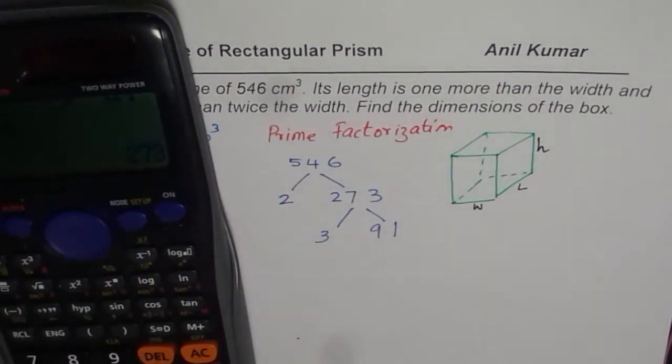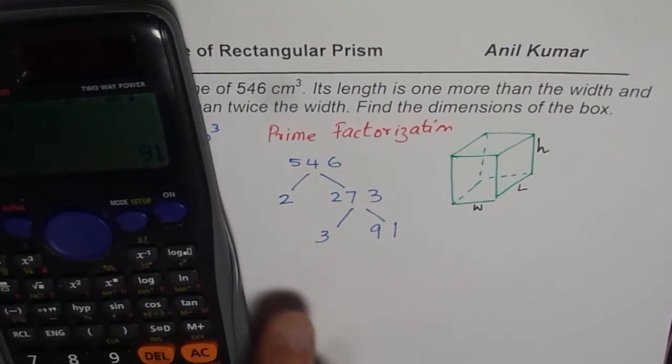Let us check our answer. So we have 273. Divide this by 3, and you get 91.